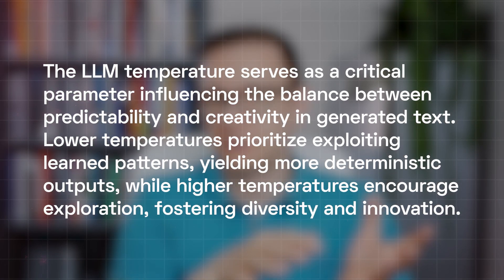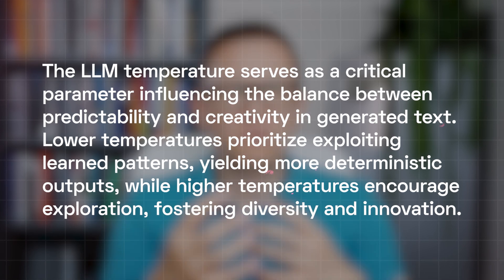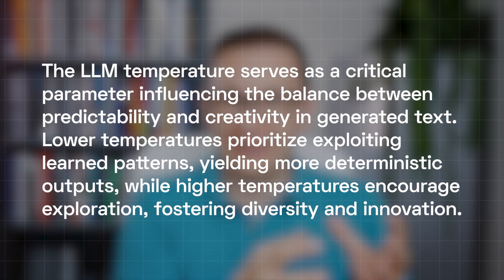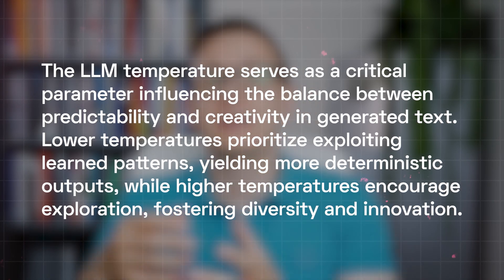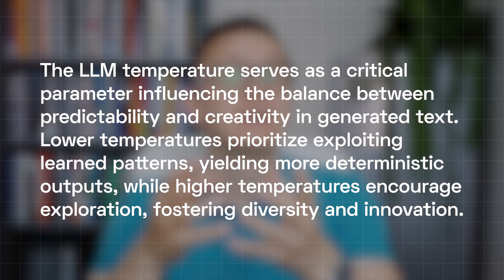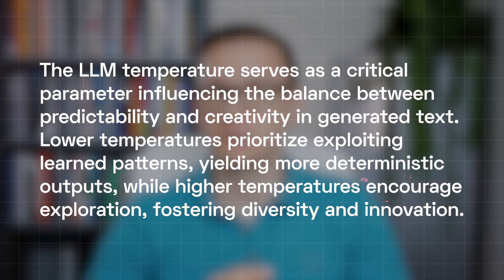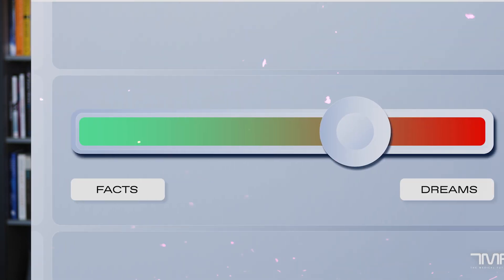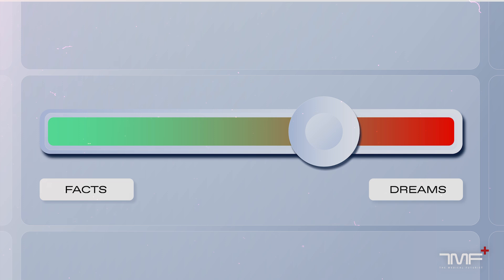The temperature serves as a critical parameter influencing the balance between predictability and creativity in generated text. Lower temperatures mean firmer, more factual answers, while higher temperatures might mean much higher creativity and potentially hallucinations. I thought that a company like OpenAI should be able to provide us with a feature like this — a range — so I can set it to a low temperature when I need medical studies and peer-reviewed papers.